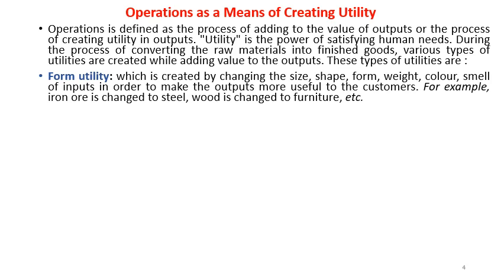The first is form utility, which is created by changing the size, shape, form, weight, color, or smell of inputs in order to make the outputs more useful to customers. In a manufacturing or steel manufacturing unit, raw material inputs are transformed into outputs. The form of the input is transformed — it could be size, shape, form, weight, color, or smell.